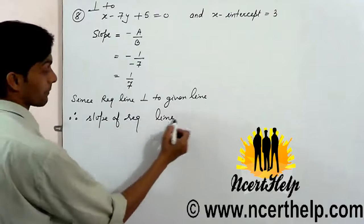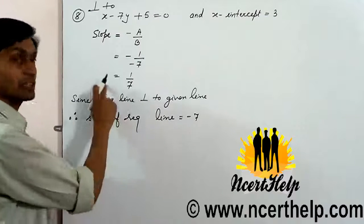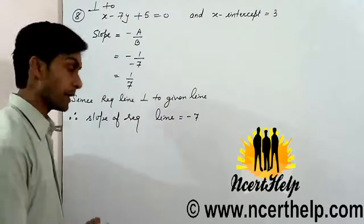The slope of the required line is minus 7, the negative reciprocal. For perpendicular lines, m1 into m2 equals minus 1. So the slope is minus 7.